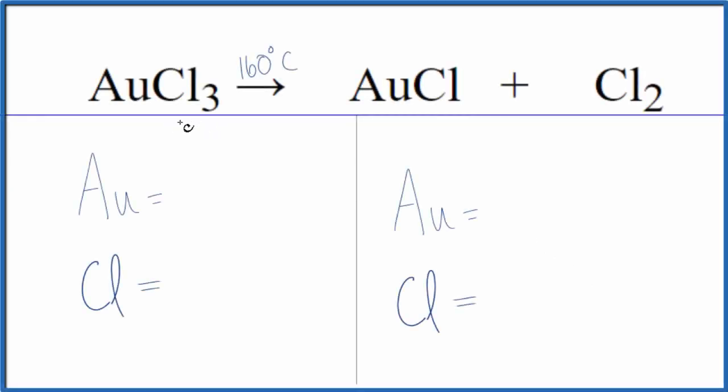In this video, we'll balance the equation for the decomposition of AuCl3. This is gold 3 chloride. It takes place at about 160 degrees Celsius.